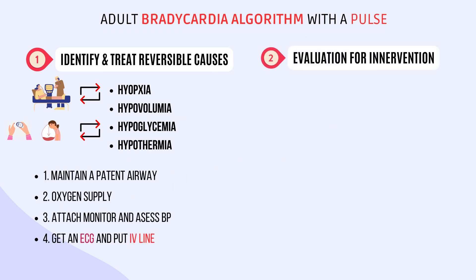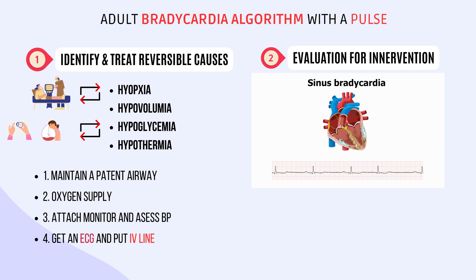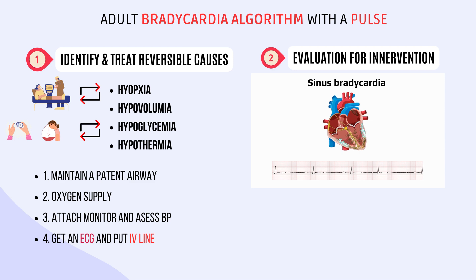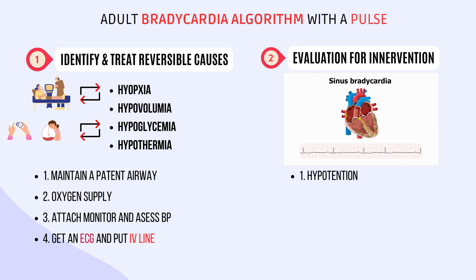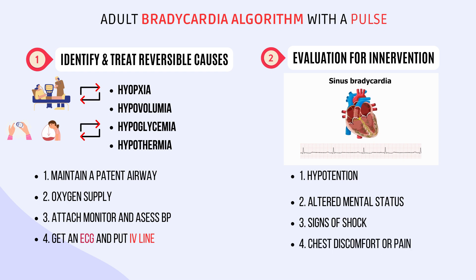Step 2: Evaluate the Need for Intervention. If the patient's heart rate is less than 50 beats per minute and they are showing signs of hemodynamic instability, the next step is to consider intervention. We need to check the patient's blood pressure, and if it's low, we may need to intervene. Consider intervention if the patient is hypotensive, if there is altered mental status, if there are signs of shock, if there is chest discomfort or pain, and lastly, if it's acute heart failure.